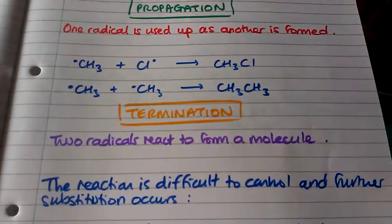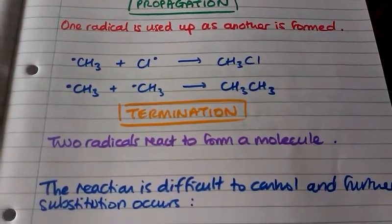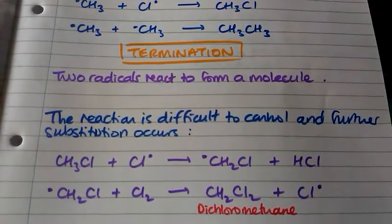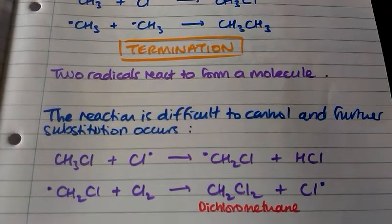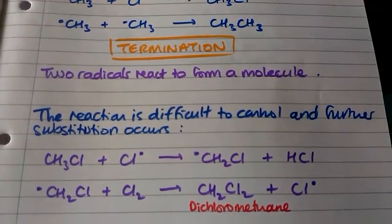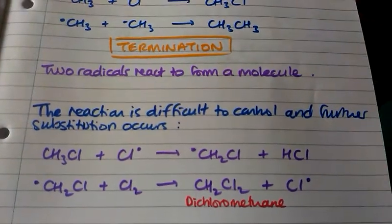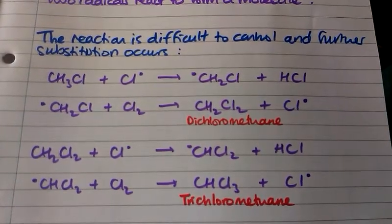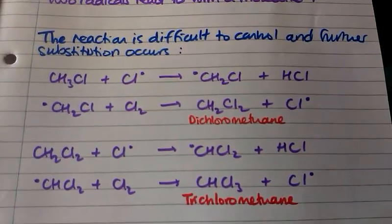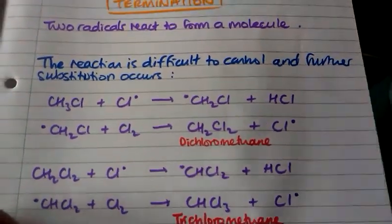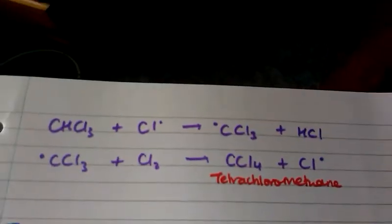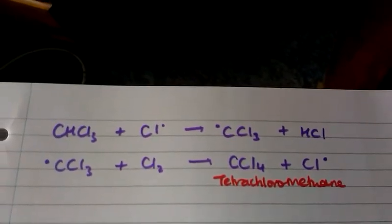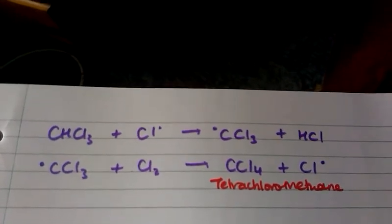However, this reaction is quite difficult to control and we always get further substitution occurring. The reaction carries on to give dichloromethane as shown here, and then we get further reactions to give trichloromethane. Notice that these are all propagation steps. And finally, further reactions to get tetrachloromethane. So all of the hydrogen atoms on the methane molecule have now been replaced with chlorine atoms.